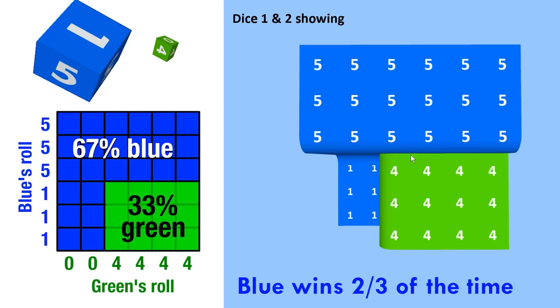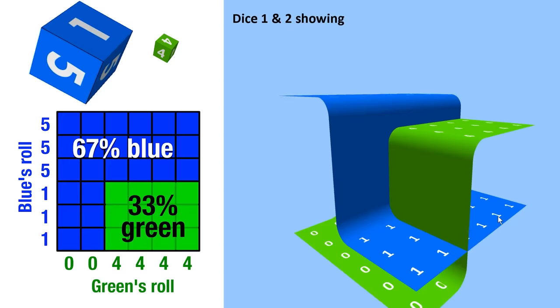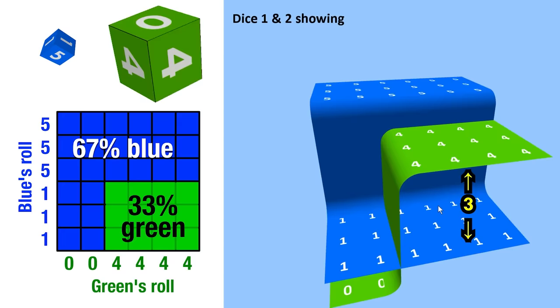But if we look from the side, we can see that a lot of the times that blue wins, they're only winning by about 1. See, blue's 1 over green's 0, or blue's 5 over green's 4. Whereas, in the 1 third chance that green wins with these 4s, green is winning by a huge margin of 3 over blue's 1s, and that's kind of like wasted potential.